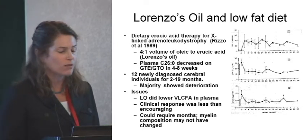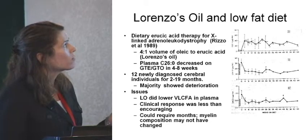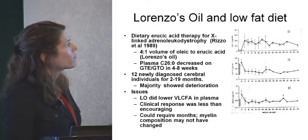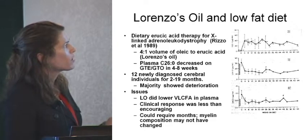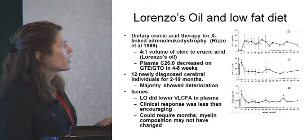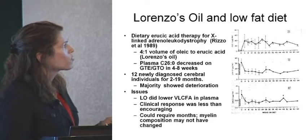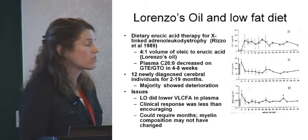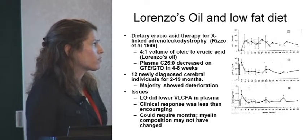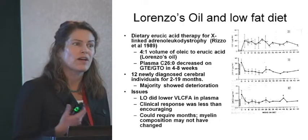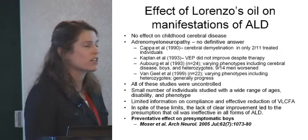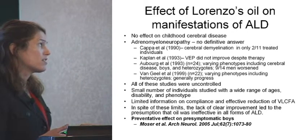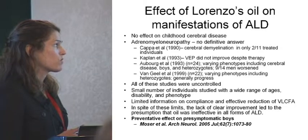Back in 1989, Rizzo designed a study thinking maybe the important thing is to decrease very long-chain fatty acids. So he designed Lorenzo's oil, which is a 4 to 1 composition of oleic to erucic acid. He took 12 newly diagnosed children and treated them for 2 to 19 months and found that within 4 to 8 weeks, the very long-chain fatty acids decreased and went back down to normal levels. However, they still showed clinical deterioration. Lorenzo's oil did what we thought we wanted it to do, but the clinical response was not very encouraging.